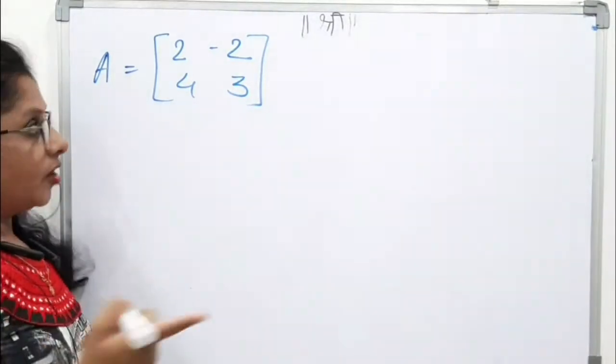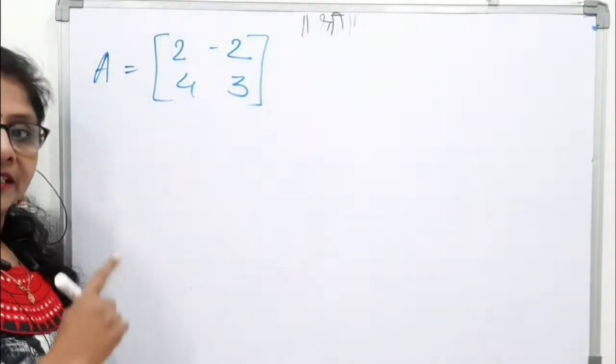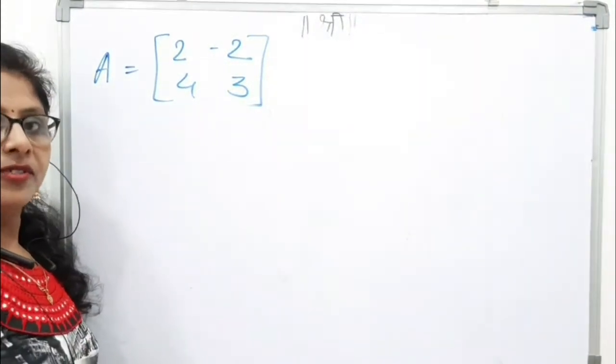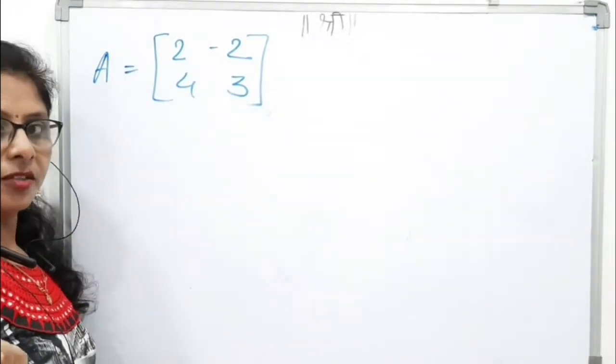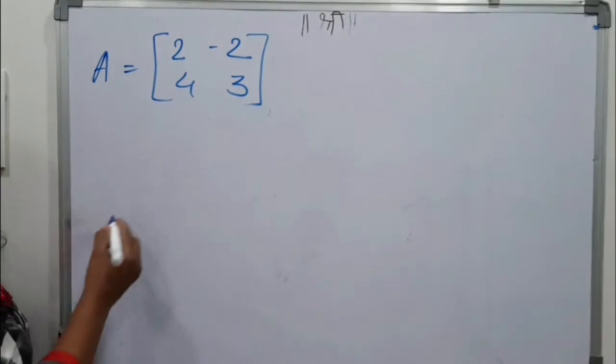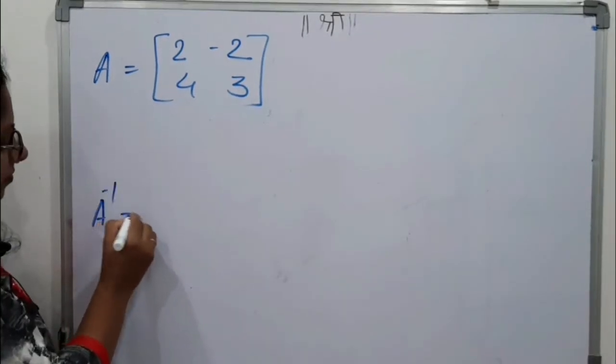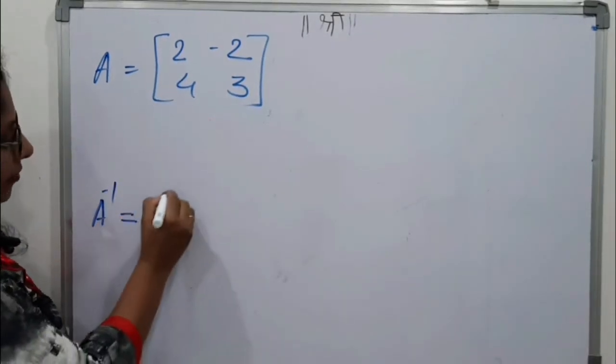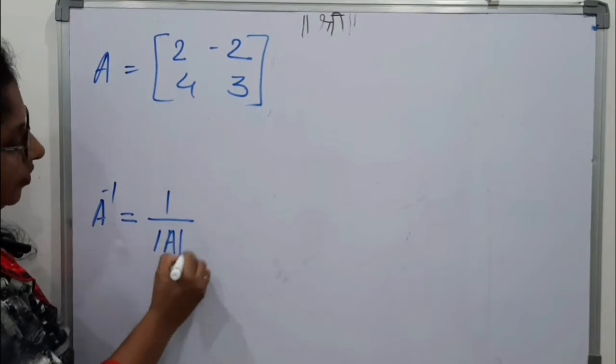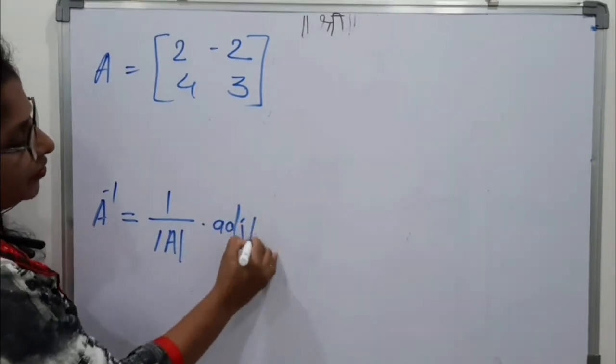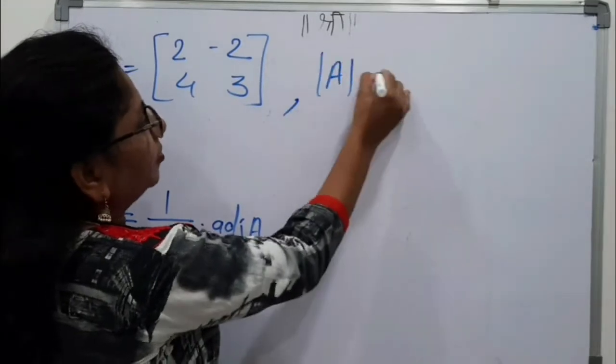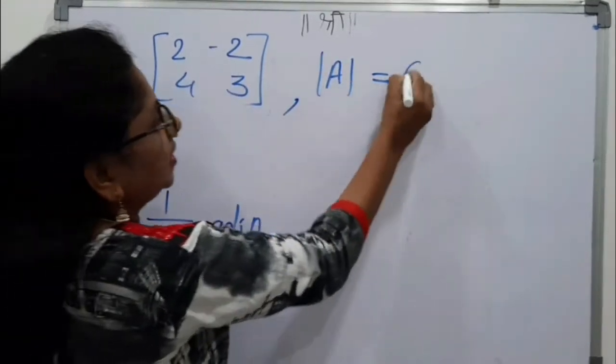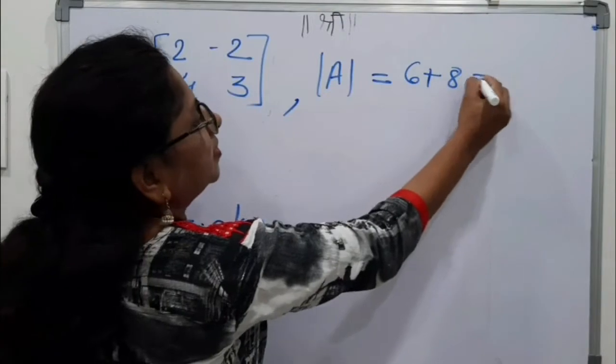If you remember, we have found the inverse of this matrix already by using adjoin method in detail. Now here this is shortcut method. By definition we know how to find the inverse: A inverse is 1 upon determinant of A into adjoin of A. Now if you find the determinant of this matrix then 6 plus 8 is 14.